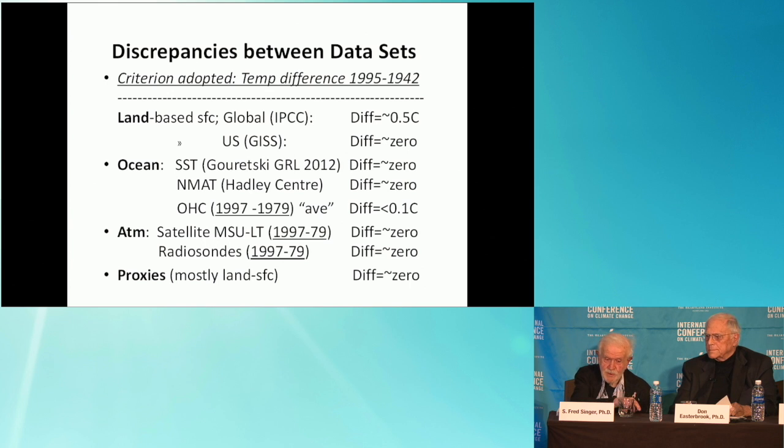The next slide shows some of the different data sets that disagree with the second warming. The atmospheric data, ocean data, the nighttime marine air temperature, all disagree with, and the proxy data, all disagree with the second warming. You have eight different data sets, including the solar data. They also disagree.